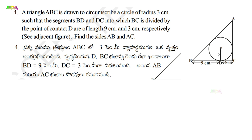So, one triangle is there and inside it one circle is drawn. This circle has a radius of 3 centimeters. The circle touches all three sides of the triangle at points of contact. BD is 9 centimeters and DC is 3 centimeters, so the total BC is 12 centimeters.